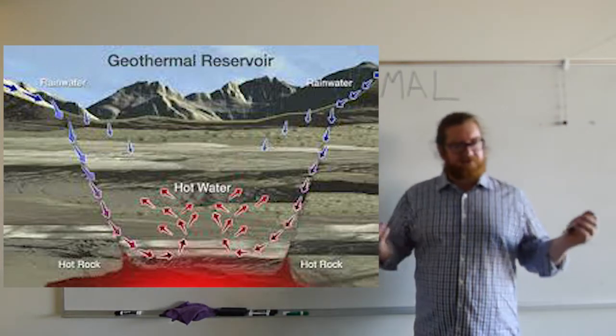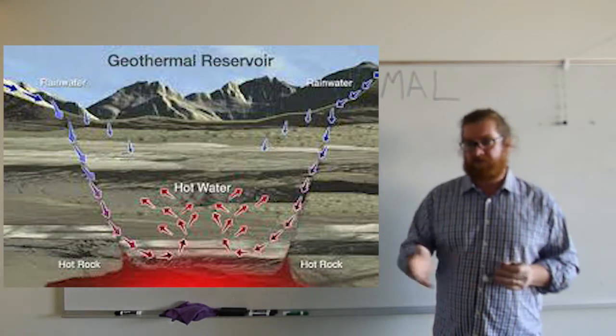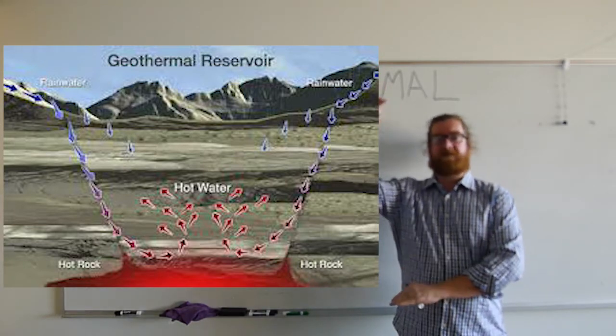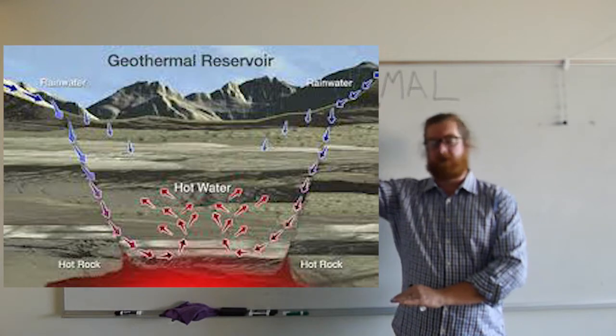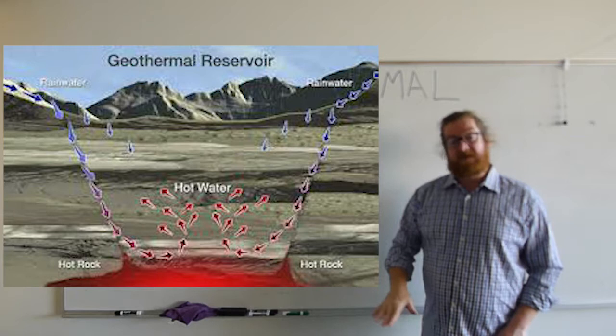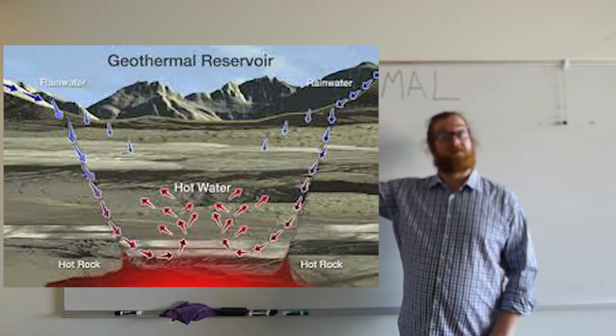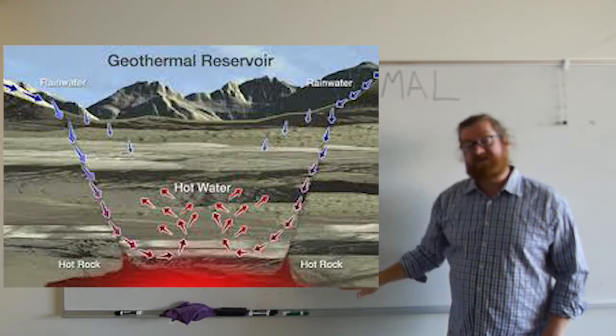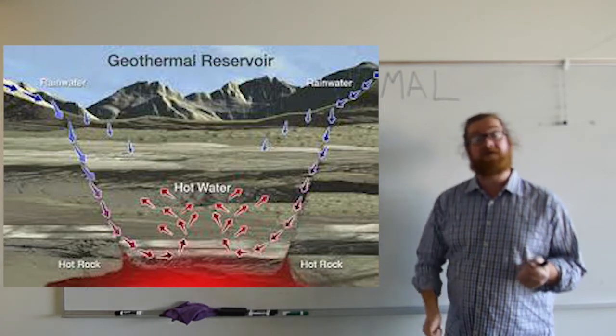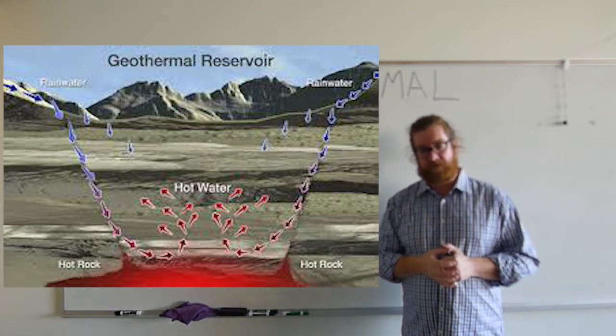So water, interestingly enough, it expands and contracts based on temperature. Before I had kids, I was a really prolific homebrewer. And I would fill my water tank 15 gallons even with water from my hose or from my sink. And that would be about 60 degrees. And as I heated that water up to about 165, 170 degrees, all of a sudden, I'd have 15 and a half gallons of water. So as water goes down to these heat sources, as it warms up, the water actually expands and that can cause it to be buoyant and it rises back to the surface. Kind of similar to some other things that we've seen in this class.